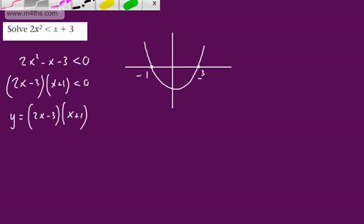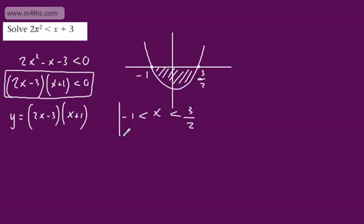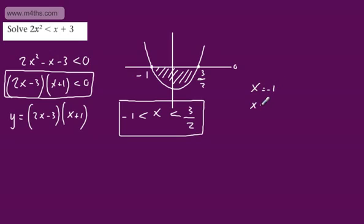So up comes a little sketch. We know that this is a positive quadratic, and we have the critical values: x equals minus 1 and x equals 3 over 2. Going back to the inequality, we're asking where this is below 0. We can see it's below 0 between the two roots, so we can write x is strictly greater than minus 1 yet in turn strictly less than positive 3 over 2. That is the region that satisfies the inequality.